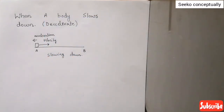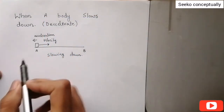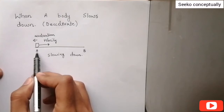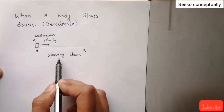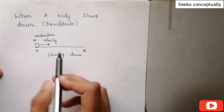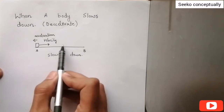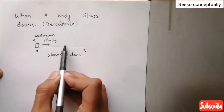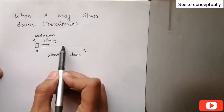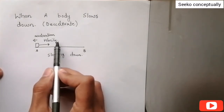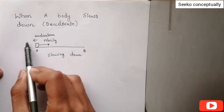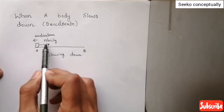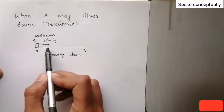For example, if this body is moving from point A to B and it is slowing down, then velocity is is direction mein hai. Lekin chunke velocity kam ho rahi hai, isliye acceleration jo hai woh in this direction mein hai, that is opposite to the direction of the velocity.